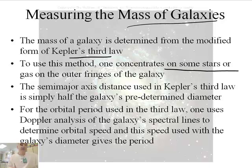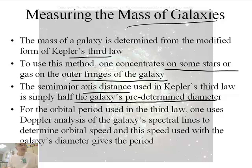Well, we'll use this method. One concentrates on some stars or gas on the outer fringes of the galaxy. So we're going to just stare at the outermost stars. And then the semi-major axis distance using Kepler's third law is simply half the galaxy's predetermined diameter. We just did diameter of a galaxy just a minute ago, right?